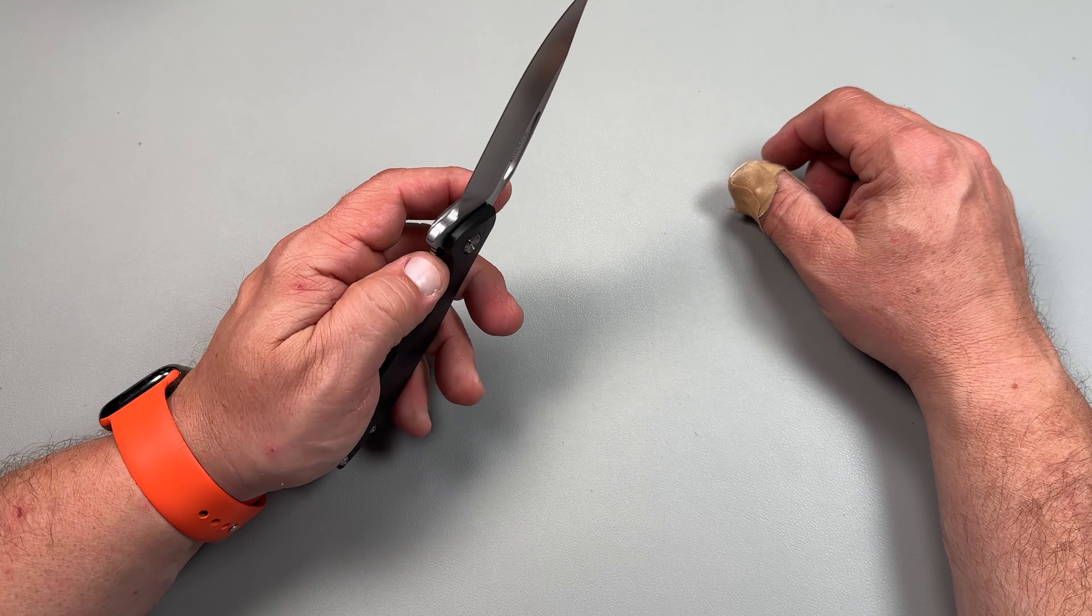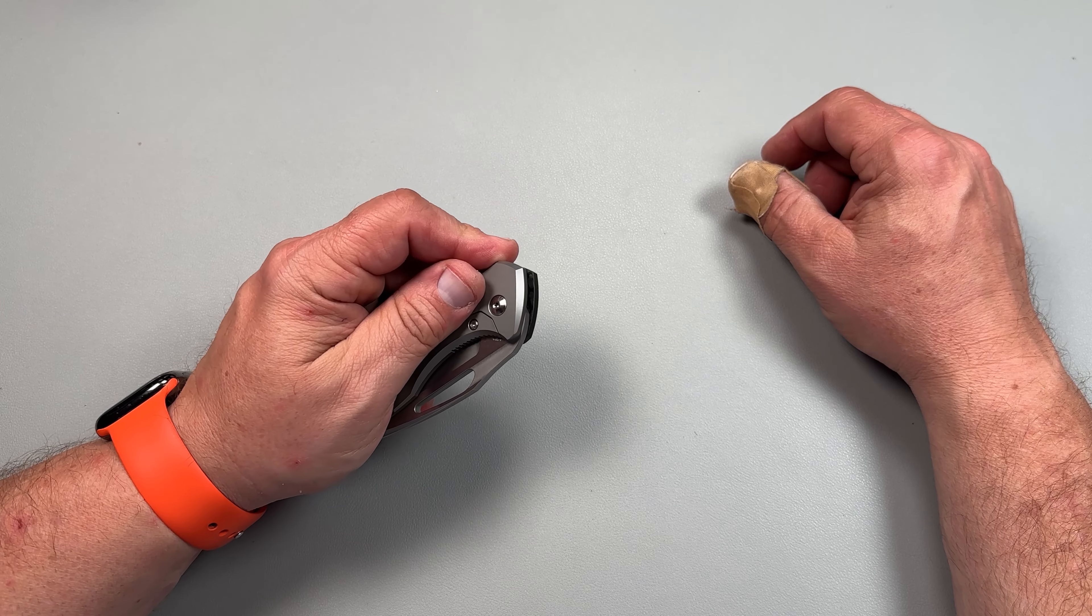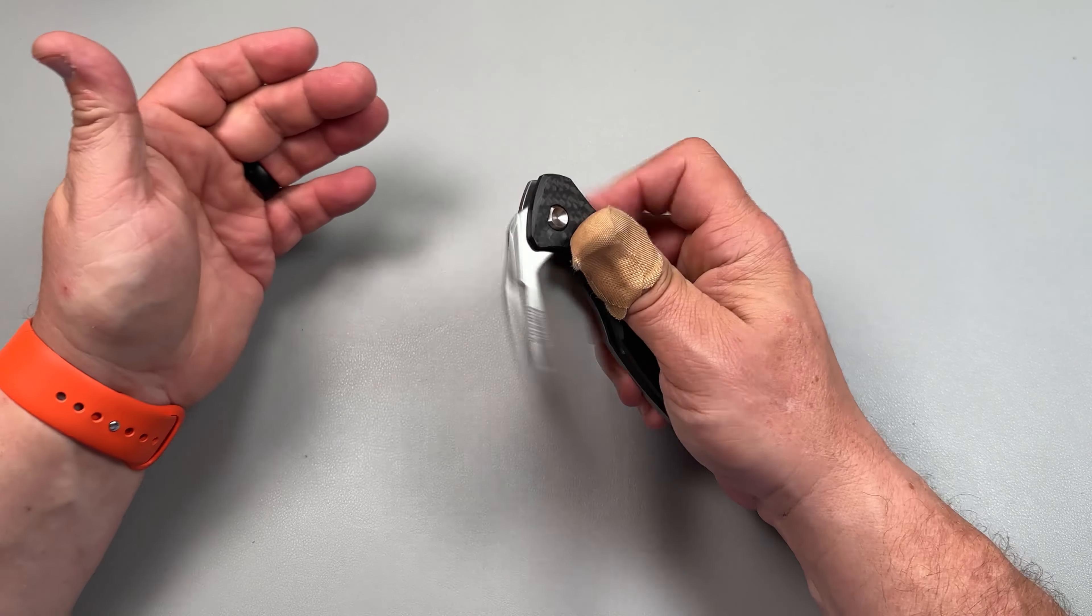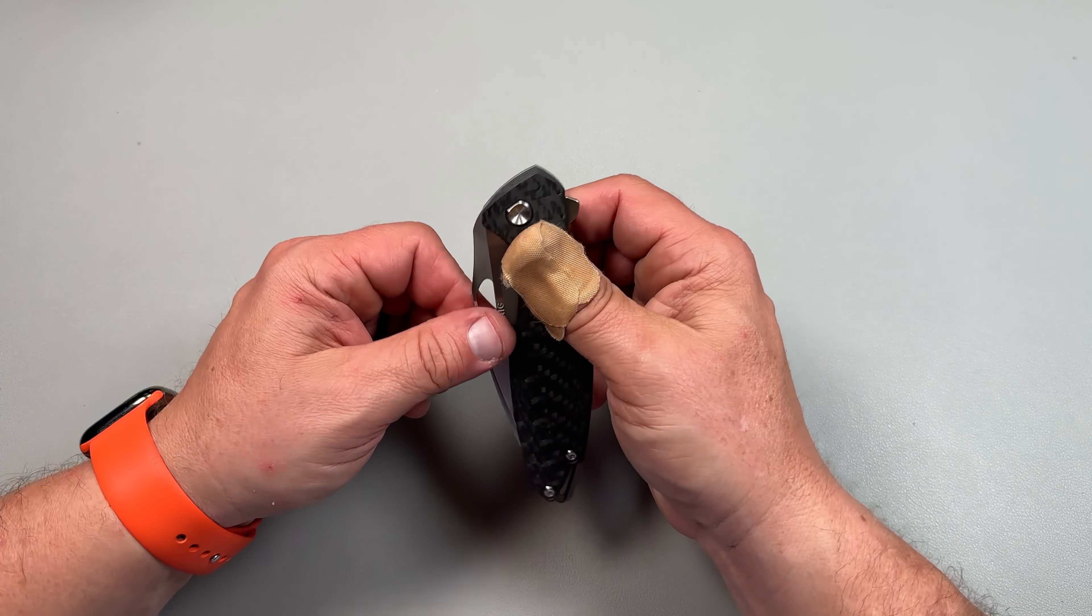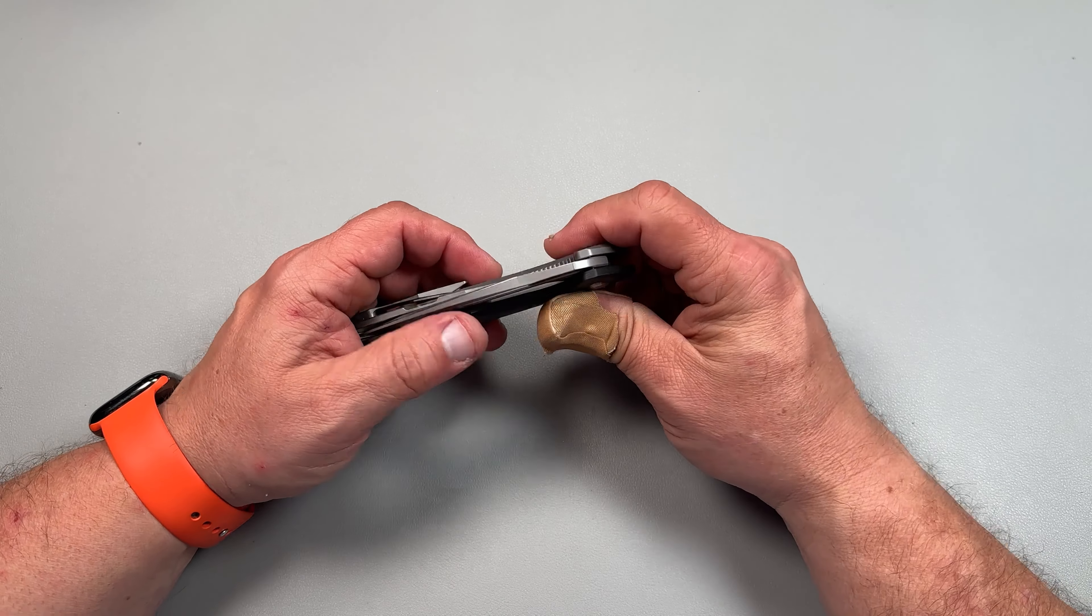It almost fixes any pivot lash or blade play that you have. So if a knife kind of rocks, you put Skiffs in there. Usually that's because the ball bearings aren't all the same diameter. It fixes a lot of those issues.